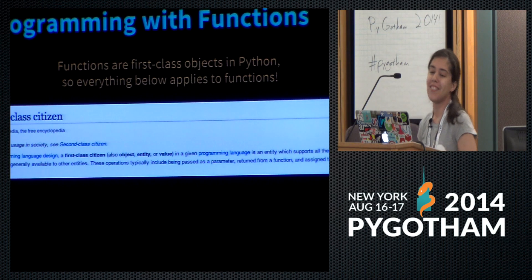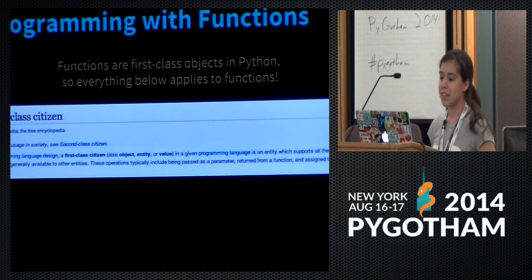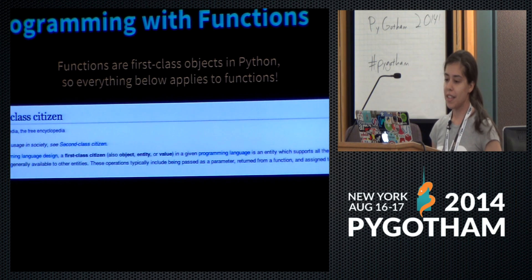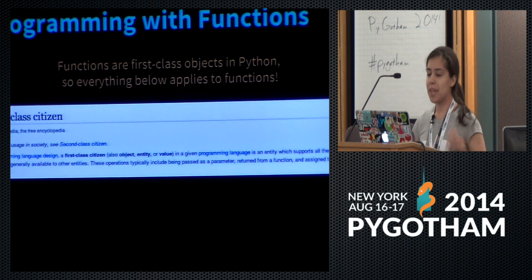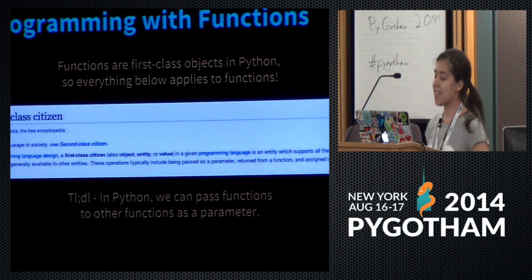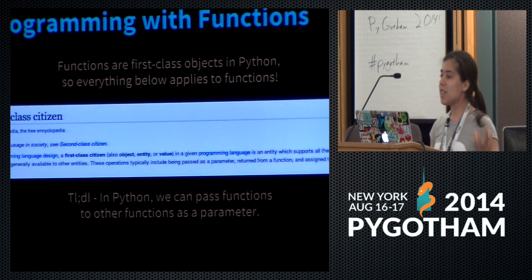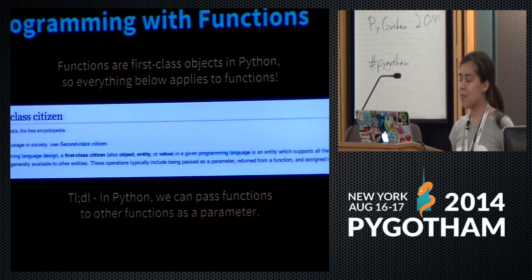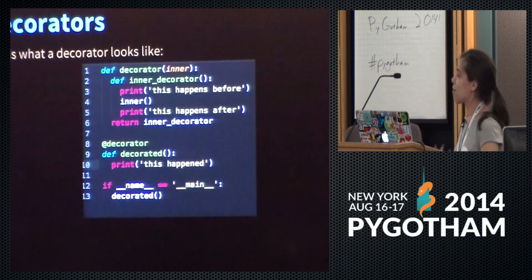So back to Wikipedia — the article on first-class citizenship. Since functions are first-class objects in Python, everything in this definition applies to functions. In programming language design, a first-class citizen in a given programming language is an entity which supports all the operations generally available to other entities. These operations typically include being passed as a parameter, returned from a function, and assigned to a variable. Those are really cool properties, and all those things are properties of functions in Python. So the moral of the story is that in Python we have this really cool ability to pass functions to other functions as a parameter, and based on that we can write things like higher-order functions. A higher-order function is really just a function that takes another function as a parameter and does something with it. Decorators are really just another name for higher-order functions.